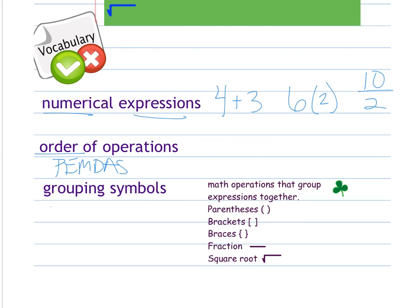Grouping symbols show numbers that are meant to be together. That is the P of PEMDAS, sometimes learned as GEMDAS. There are various kinds: parentheses, brackets, braces, the fraction bar separates, and the square root separates things that should be done in a specific order. Make sure you are aware of vocabulary and use it when discussing order of operations.